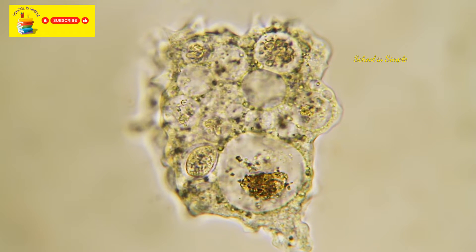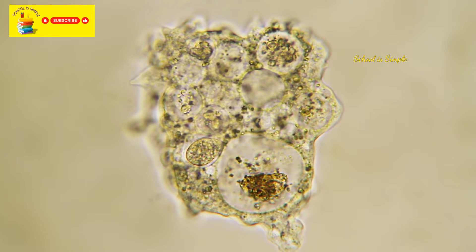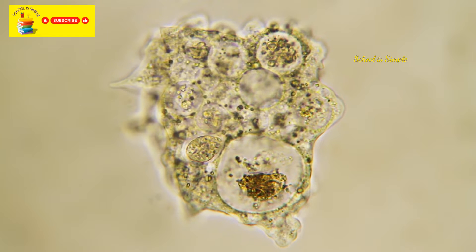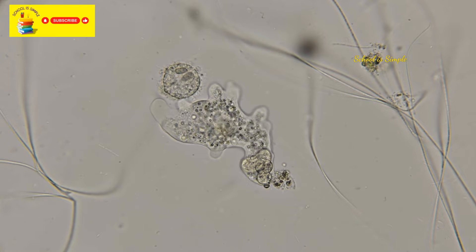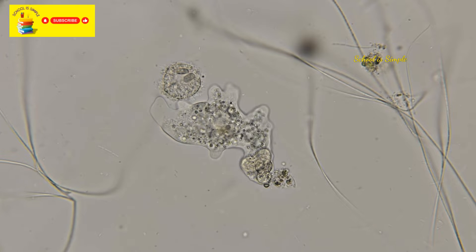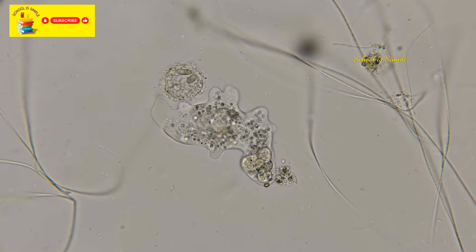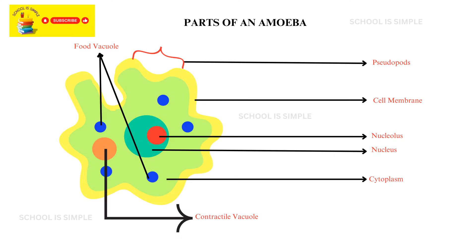Amoeba is a single-celled organism which falls under the category of celled creatures that belong to the phylum protozoa. These protists have a captivating biology. This is how amoeba looks under a microscope. Amoebas are known for their structure that can change shapes and their ability to use pseudopods — extensions of their cell membranes — for movement and capturing food. Let us now see the parts of amoeba and learn their functions.